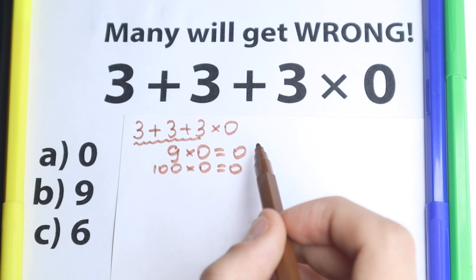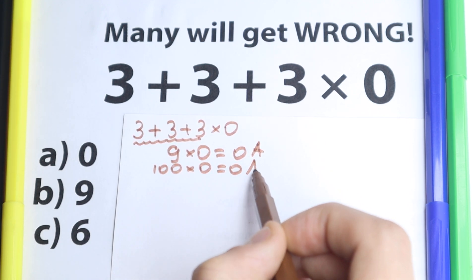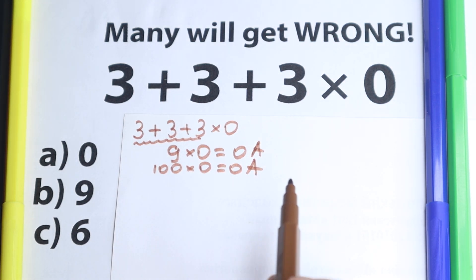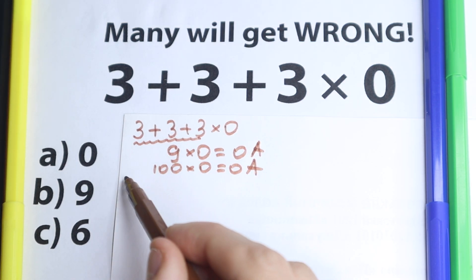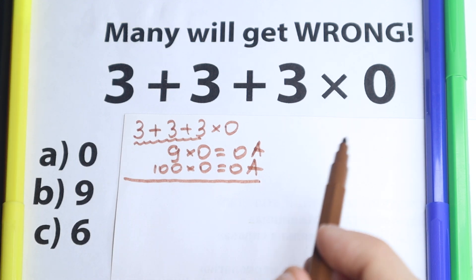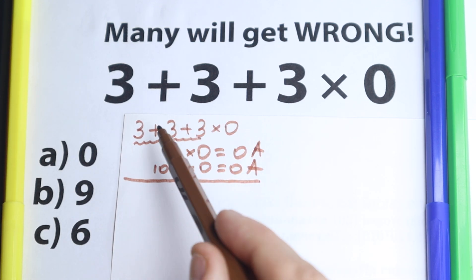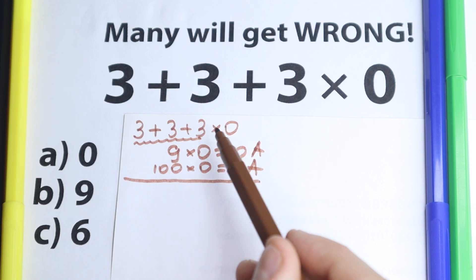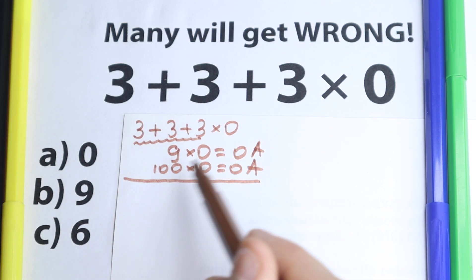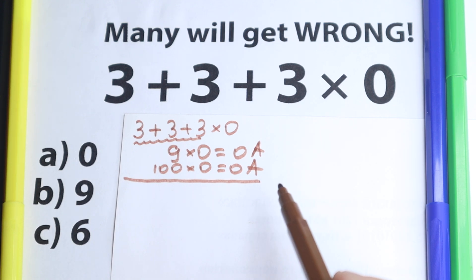One part of students solves it like that — they say option A is the correct answer and move on. But I want to say this is a very bad solution, this is absolutely wrong, because we're solving it however we want — just adding and then multiplying. It's not about math rules; we just solve it as whatever we want.